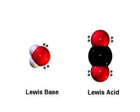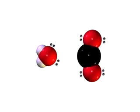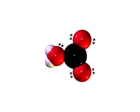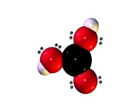Carbon dioxide acts as a Lewis acid toward water. One of the unshared electron pairs on oxygen is donated to the carbon atom, as one of the CO double bond electron pairs is moved onto the oxygen of carbon dioxide. A proton from the water molecule moves to the oxygen of the carbon dioxide molecule, completing the formation of carbonic acid.